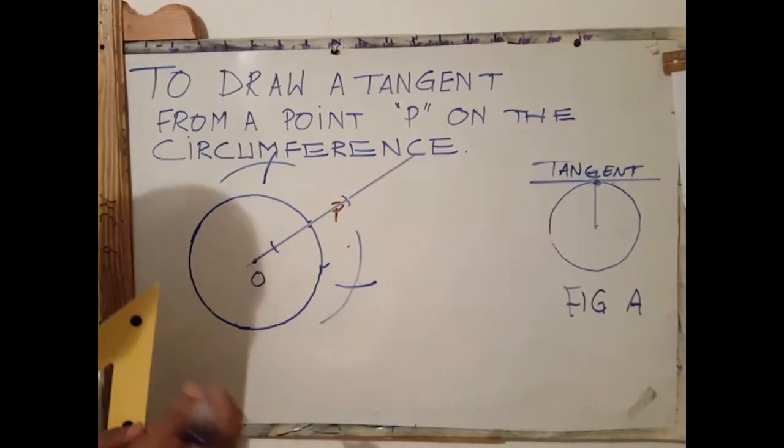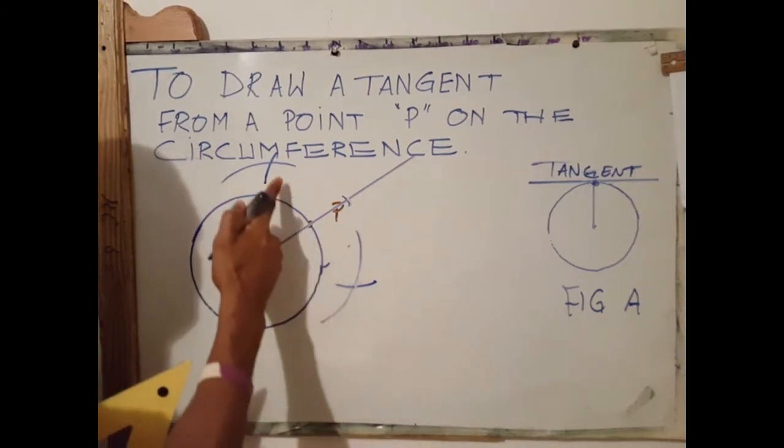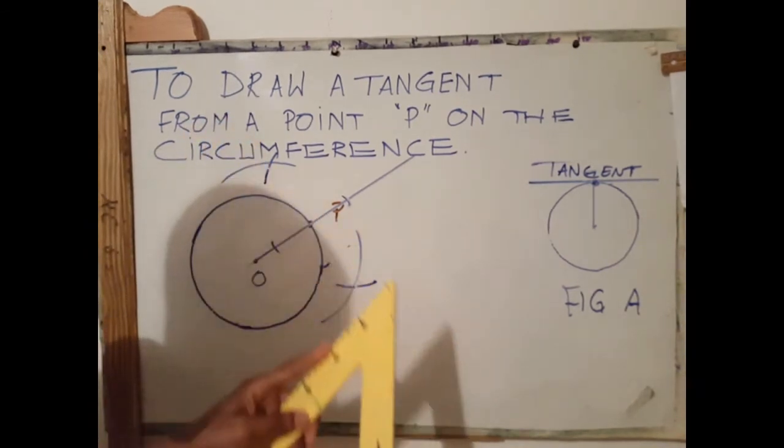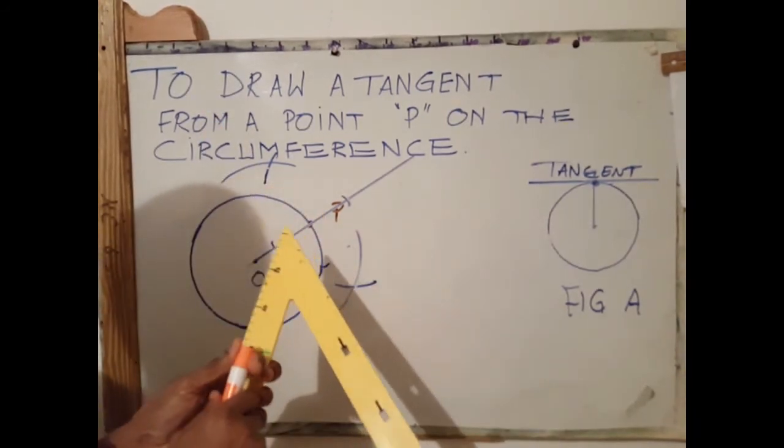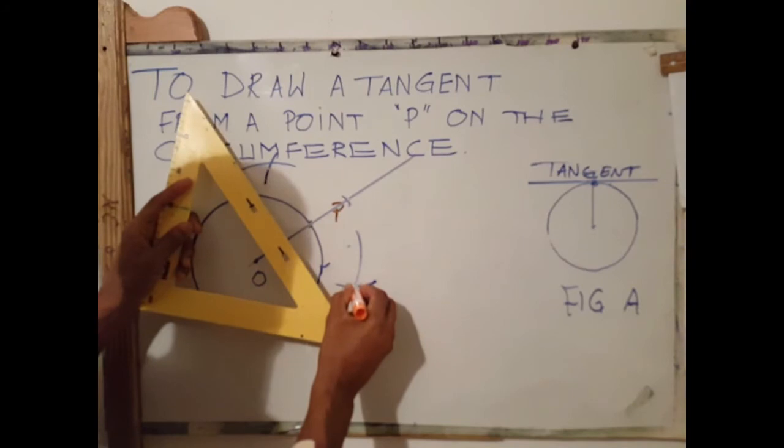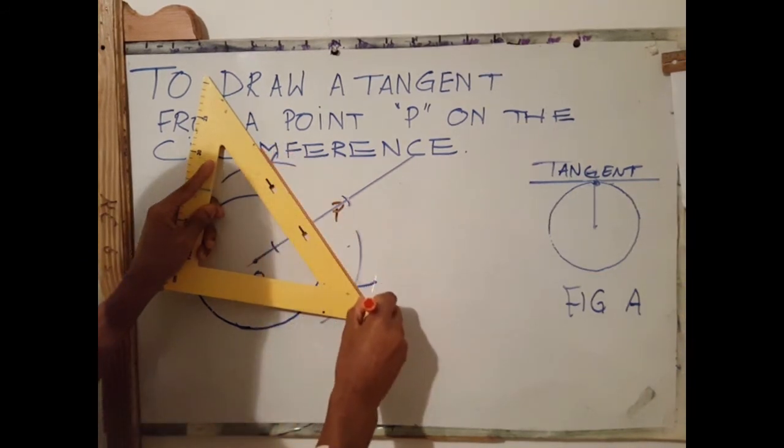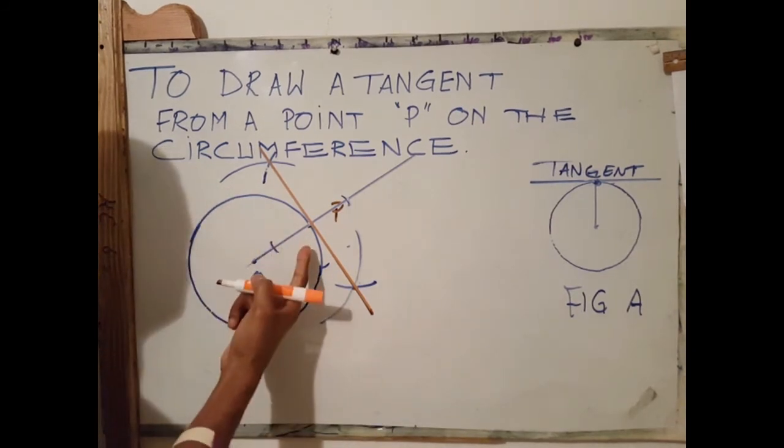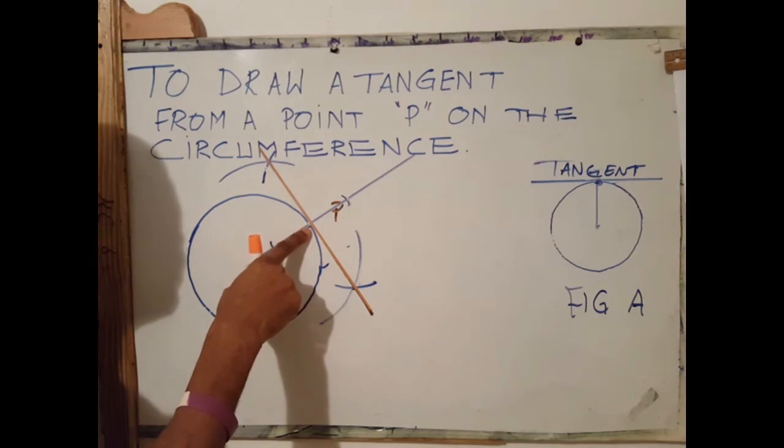The next step is to draw a line through the points where both arcs meet. And what we have here is a tangent being drawn or being formed at a point on the circumference here.